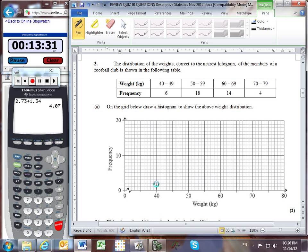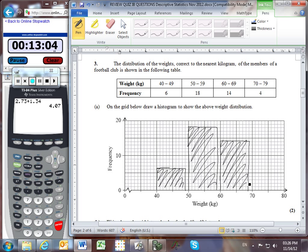Creating the histogram: from 40 to 49 we have a frequency of 6; from 50 to 59, a frequency of 18; from 60 to 69, a frequency of 14; and from 70 to 79, a frequency of 4.